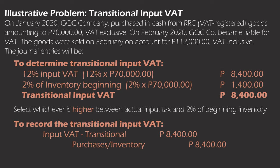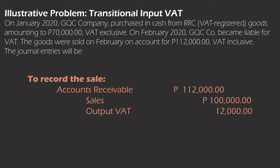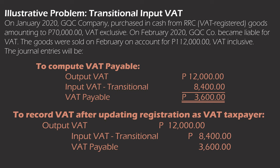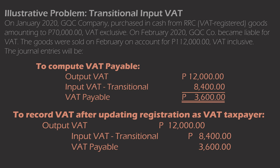To record the transitional input VAT: debit input VAT (transitional) 8,400; credit purchases/inventory 8,400. To record the sale with output VAT (when the entity is now VAT liable): debit accounts receivable 112,000; credit sales 100,000 and output VAT 12,000. Comparing output VAT and transitional input VAT gives VAT payable of 3,600. To record VAT payable: debit output VAT 12,000; credit input VAT 8,400 and VAT payable 3,600.